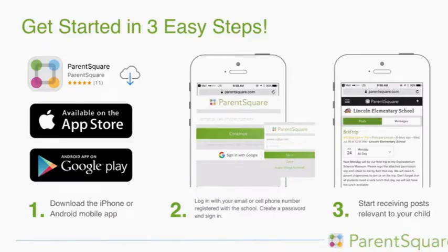Let's get started. There are three easy steps. The first is to download the iPhone or Android mobile ParentSquare app. The second step is to enter your email or cell phone number that is registered with your school. You can also sign in with a Google account. You will then enter your password and click Sign In. If you forget your password, you can always click Forgot Password to get a reset. And finally, step number three, you will start receiving all relevant school information for your child.